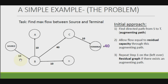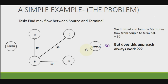We repeat step 1 again and find a path from source to terminal — one exists, so we choose it. We allow flow equal to the residual capacity, which in this case is 10, the maximum we can push through this path. We calculate the residual graph again, then repeat step 1. But no path exists, so we are finished. The maximum flow for this graph is 50.